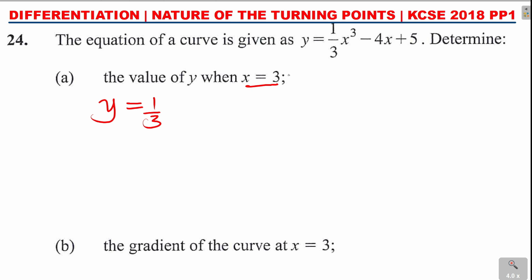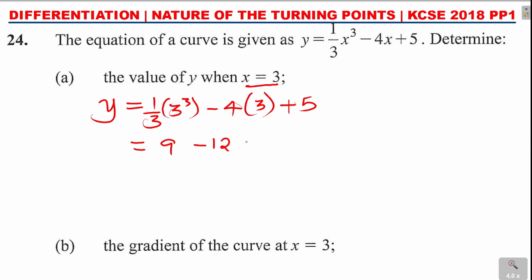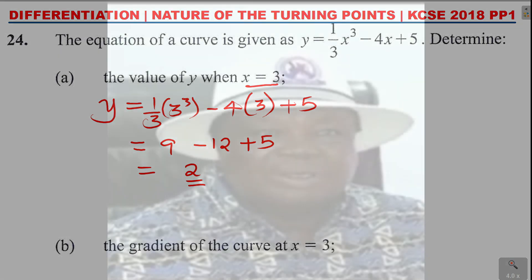So y equals one-third x cubed, and x is 3, so you put 3 there: one-third times 3 cubed minus 4 times 3 plus 5. One-third of 27 gives 9, minus 12, plus 5. That gives 9 plus 5 minus 12, which equals 2. So the value of y when x equals 3 is 2.